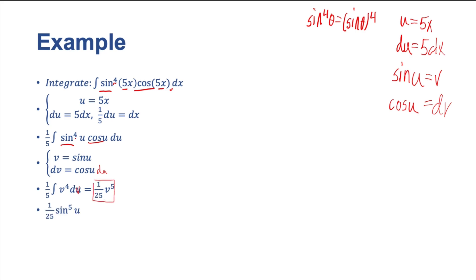Let's go back to u first. v is equal to sine of u. So we just rewrite that as 1/25 sin^5(u).